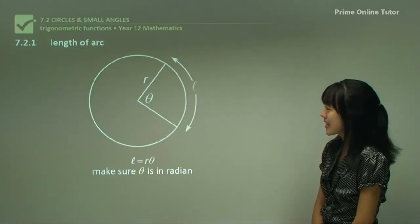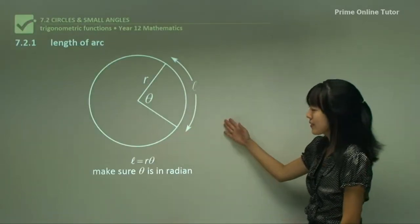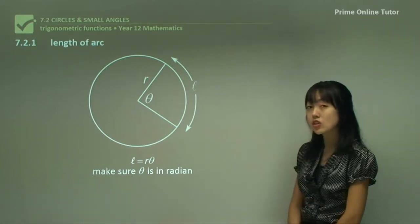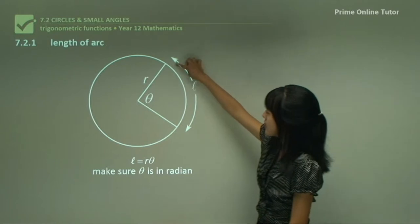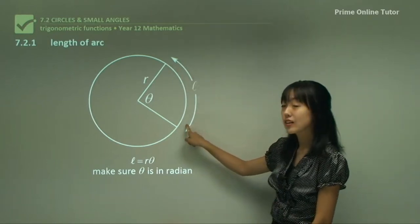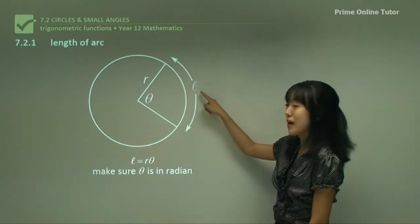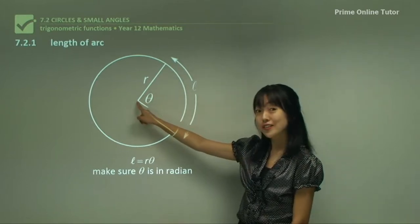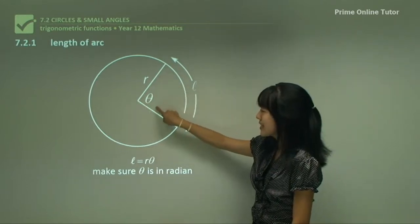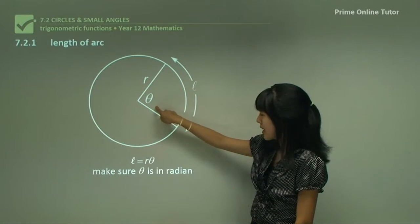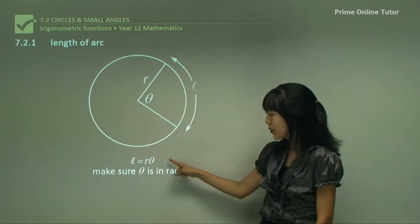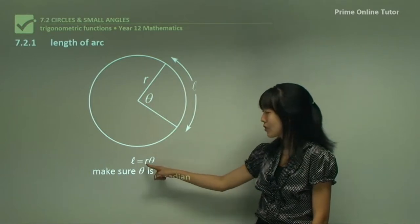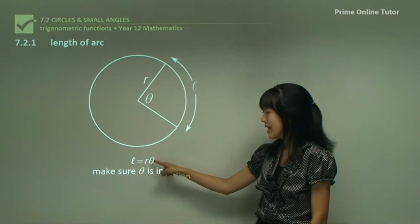So this is a circle. This is an equation that you do have to remember, but it's not too difficult. This is the length of the arc represented by L, this is the radius, this is the centre of the circle, and this is an angle called theta. The equation is that L, the length of the arc, is equal to radius times theta.